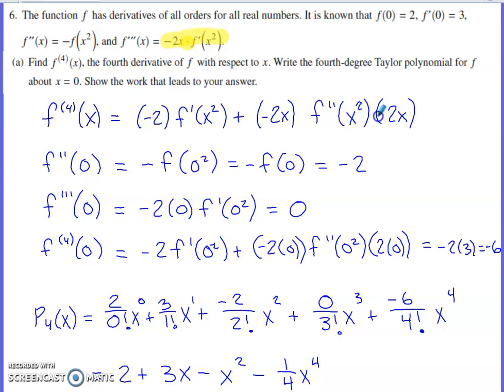Now to build the fourth degree polynomial, what we are going to need is the function value at zero divided by zero factorial times x to the zero power, plus the first derivative value at zero divided by one factorial times x to the first.